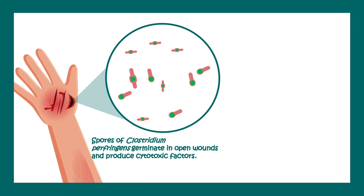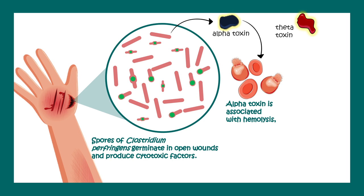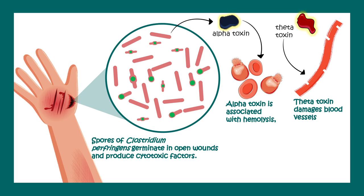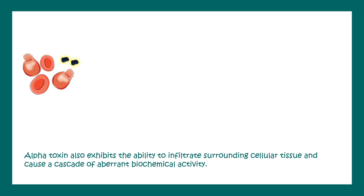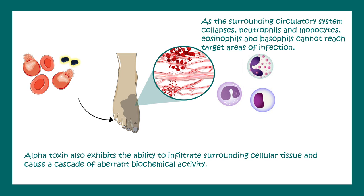Spores of Clostridium perfringens can germinate in open wounds and produce cytotoxic substances including alpha toxin and theta toxin. The alpha toxin is associated with hemolysis — rupturing red blood cells — and the theta toxin can damage blood vessel walls, leading to restriction in blood flow. When blood flow is restricted in nearby tissue, further restriction occurs and immune cells such as neutrophils and basophils cannot reach the target region to combat the pathogen, effectively blocking the immune response.